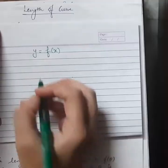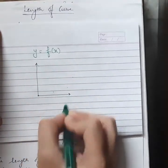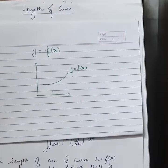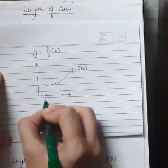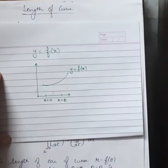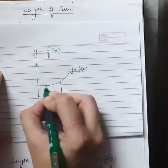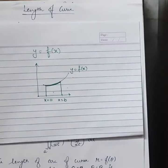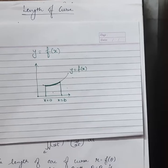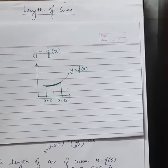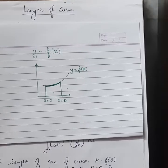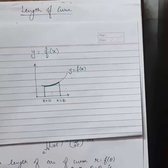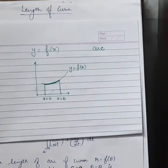Let us say we are given a curve y equals f(x). Graphically, let's say the curve looks something like this. This is the given curve y equals f(x) and we wish to calculate the length of this curve between two desired points x equals a and x equals b. The points can be part of the curve or the full curve — that depends on the situation. When we calculate the length of part of a curve, we call it the arc of that curve.